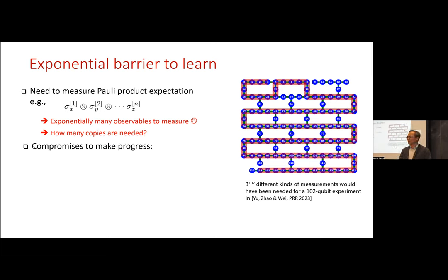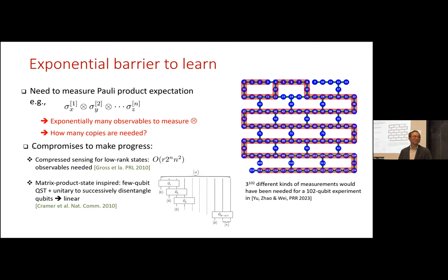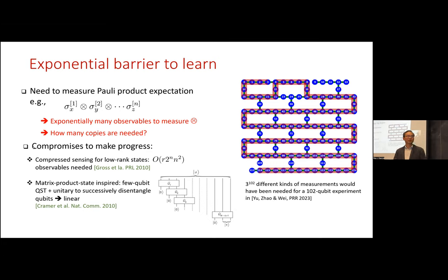To make progress, we compromise. There are a few proposals. For example, people propose using compressed sensing designed for low-rank states, which reduces the complexity slightly. There's also work by Cramer and collaborators inspired by matrix product states: you can think of a state as being represented as an MPS and use SVD, design unitary circuits to disentangle the state, measure, and do this sequentially.